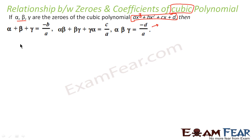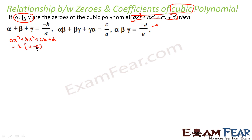I'll prove this in front of you just now. So it is given that alpha, beta, and gamma are zeros of the polynomial. So I can write ax³ + bx² + cx + d as k·(x − alpha)·(x − beta)·(x − gamma), where alpha, beta, and gamma are the zeros of this cubic polynomial and k is some constant. I have done the same thing for the quadratic polynomial also.